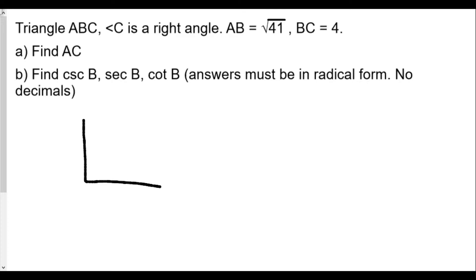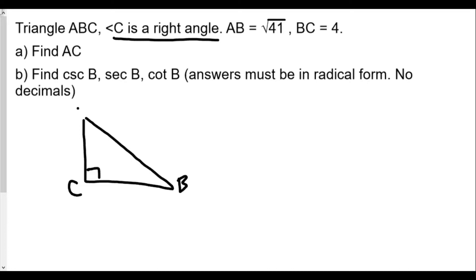First off, it's a right triangle, and our right angle will be angle C. Now where we put A and B doesn't really matter, but since I want to find B, I'll put B here and A here — it makes it a little easier to see since everything is in terms of B. In this case, BC is 4 and AB is the square root of 41. When you square a square root, it's just the number under the radical, so we want to find the third side — I'll call it B — using the Pythagorean theorem: a² + b² = c².